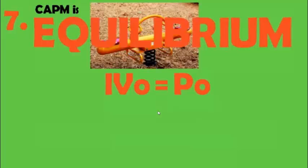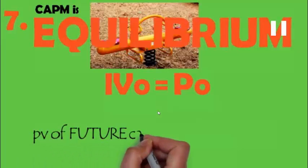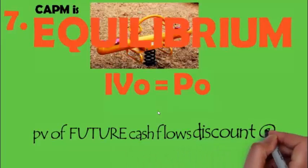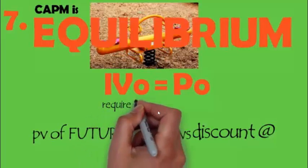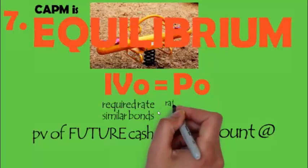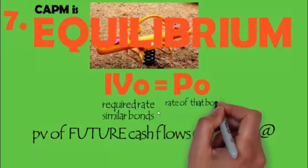What is the meaning of this? So IV zero, that is the intrinsic value, is the present value of future cash inflows at the required rate of return of that particular bond.